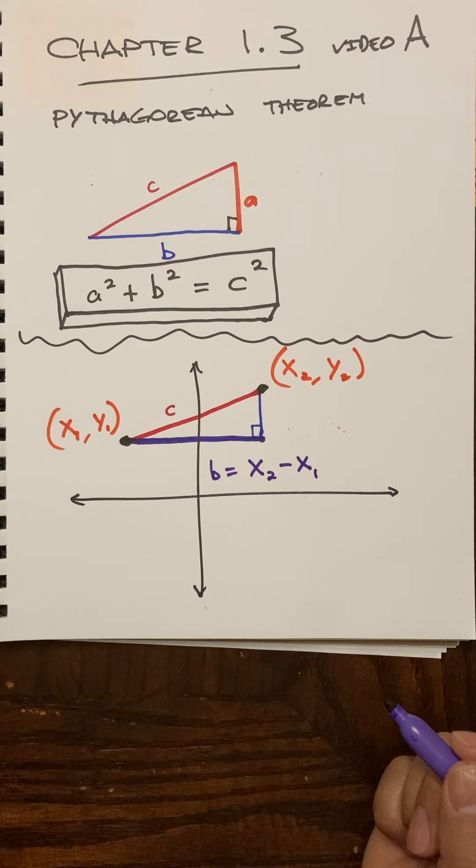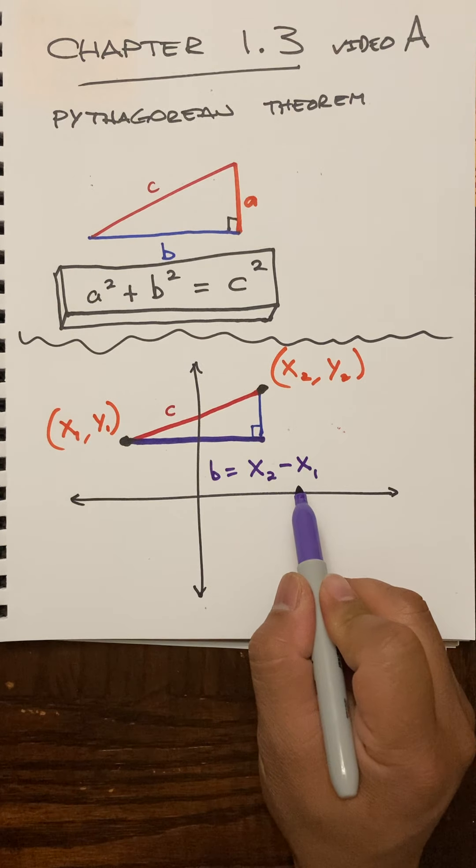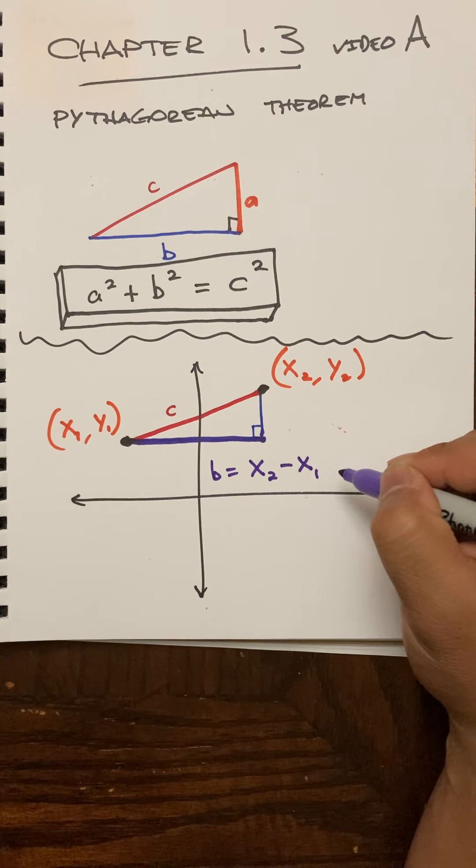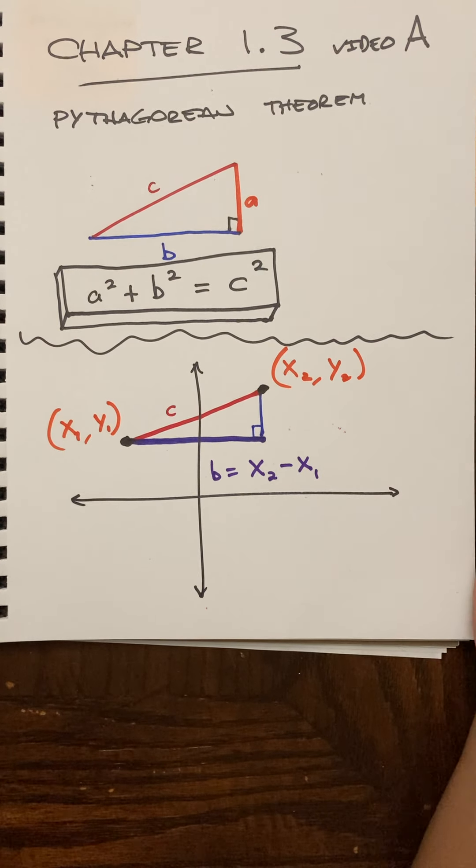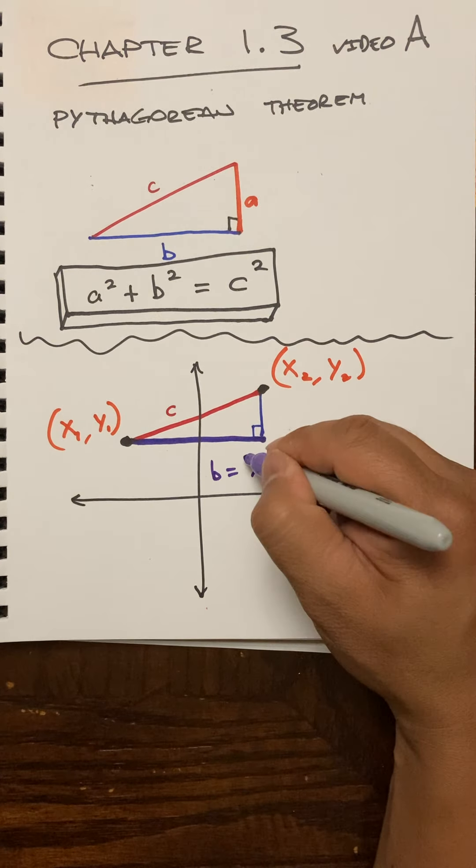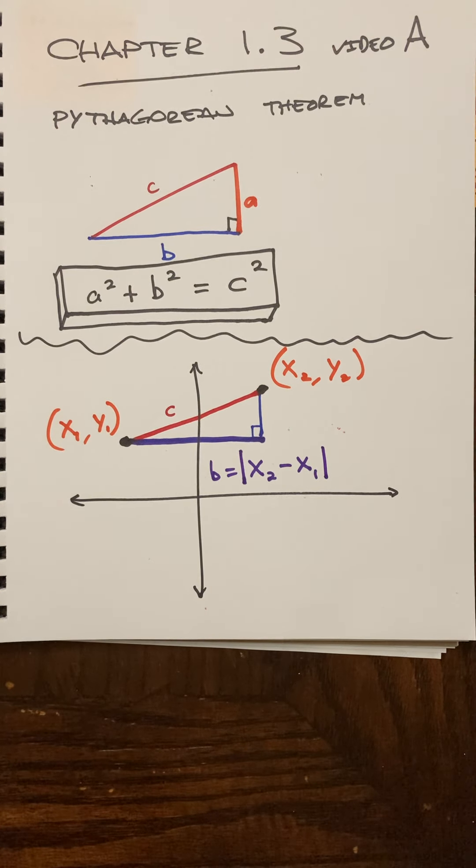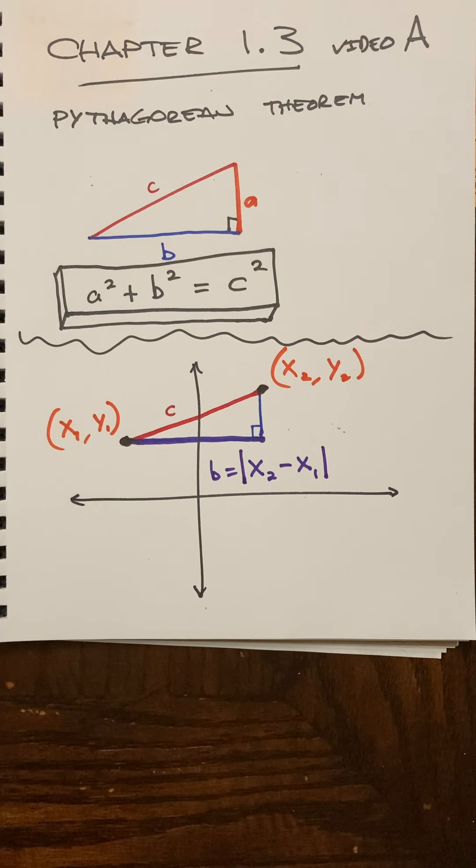Now it doesn't really matter which way I subtract because I'm only going to take the positive answer of this. Okay, to do that mathematically correctly, I'm going to put absolute value bars right there, and that just means keep the positive answer.